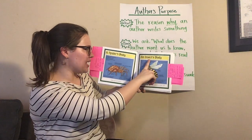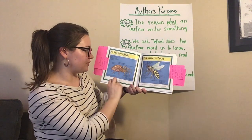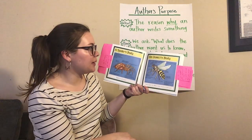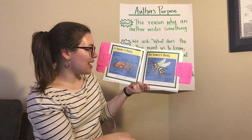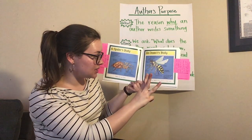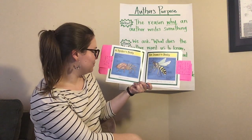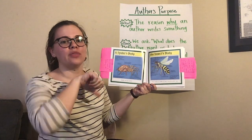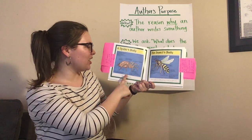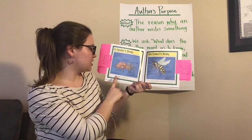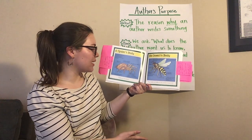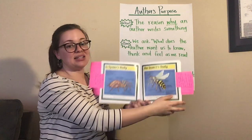On this side the heading says An Insect's Body. I wonder if the author is trying to show us that these are similar or different. A spider's body has two parts: the abdomen and the cephalothorax. An insect's body has three parts: the head, the thorax, and the abdomen. Thumbs up or thumbs down — do you think these bodies are similar? Spiders are not insects. Their bodies are different from insects in many ways, and we just found that out by looking at the labels.